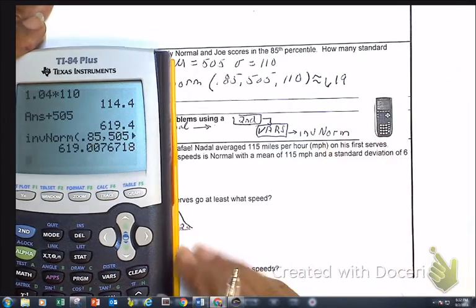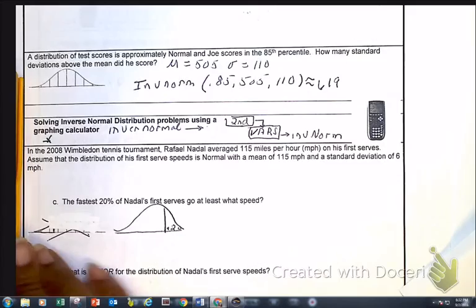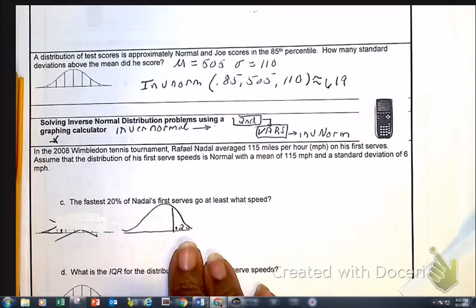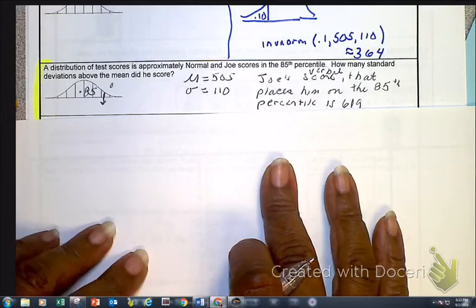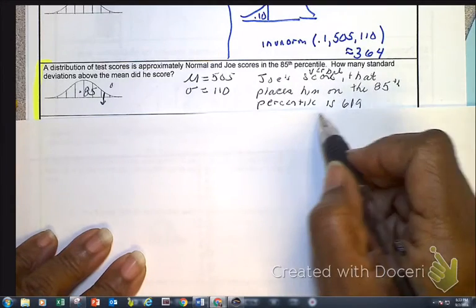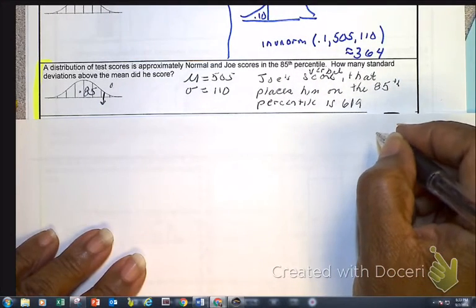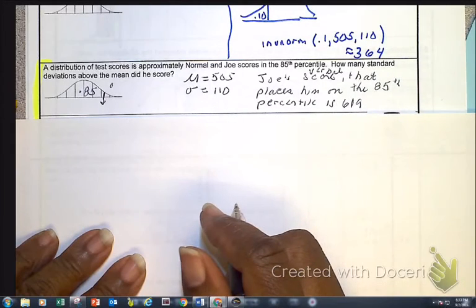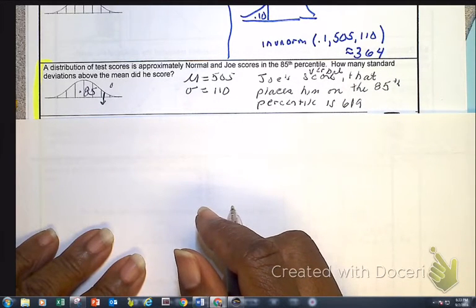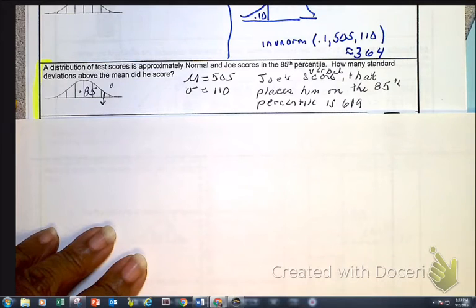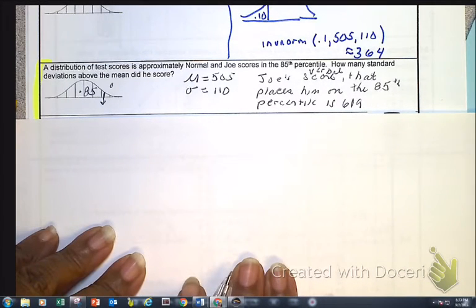So as I interpret that, it is as follows. So Joe's verbal score that placed him in the 85th percentile is approximately 619 on that verbal SAT. Okay, that's it for inverse norm.